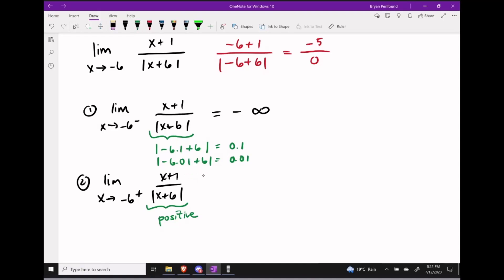So if our numerator's always going to be negative and our denominator's always going to be a positive small value, then what we're going to get are unbounded y values tending towards minus infinity once again.